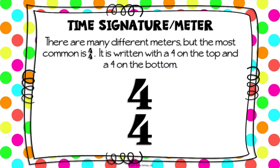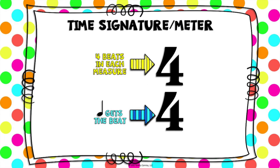This idea of a time signature or a meter — there are a lot of different kinds of time signatures, but we're gonna focus on the most common one today, where there's a four on the top and a four on the bottom. We call that four-four. In four-four time, the top number tells us how many beats are in a measure — four beats — and the number on the bottom tells us what kind of note gets the beat. A quarter note in four-four time gets the beat.